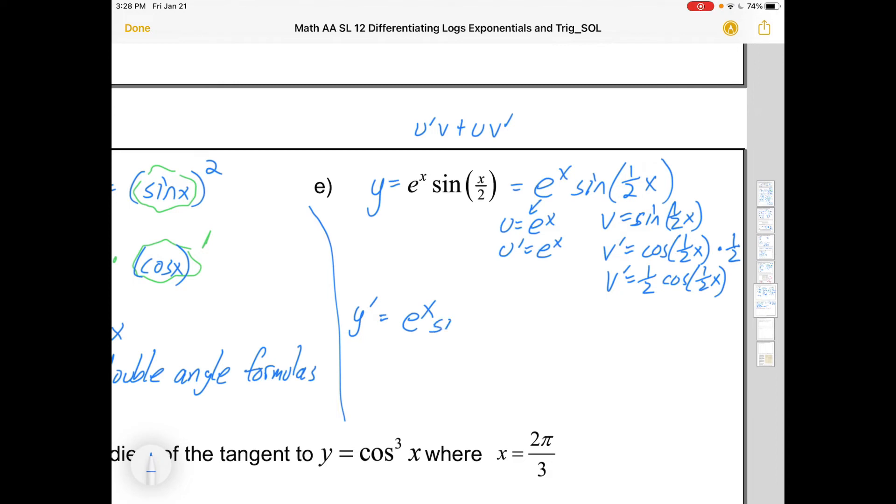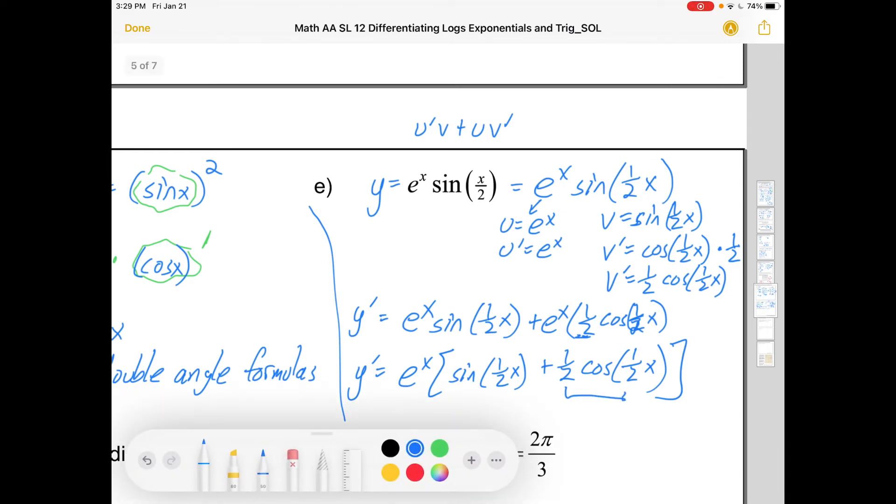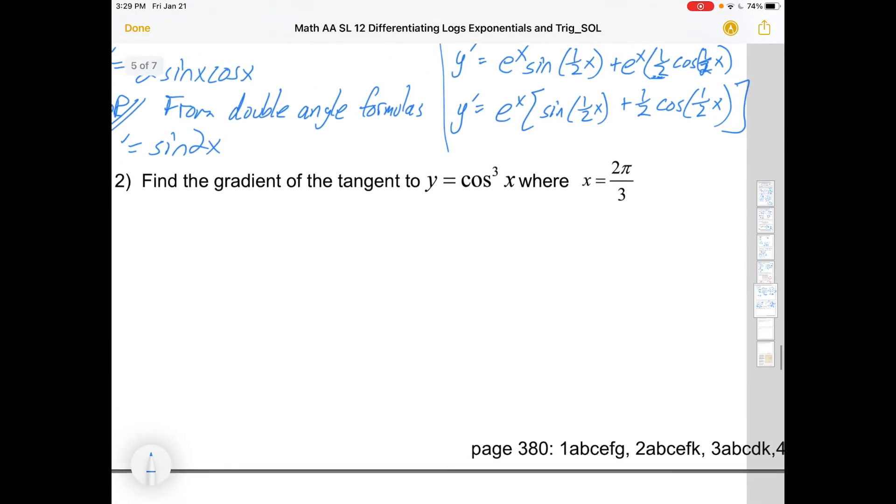So u prime v plus u, which happens to be the same thing, v prime, which is a half cos of a half x, or x over 2 if you prefer. If you want to take out a common factor, that's lovely. There's a common factor of e to the x would leave you with sine of a half x plus a half cos of a half x. Do you need to take out the e to the x? No. You should definitely make sure though that that half in this term right over here, it goes to the front of the term because numerical coefficients should go out front. And do not multiply this half by this half. One of them is like a coefficient. If you were to graph it, the half out front affects the amplitude. The half inside, that affects the period.